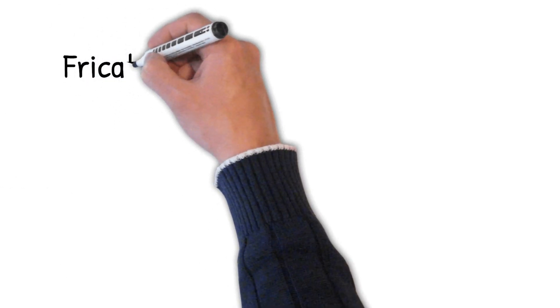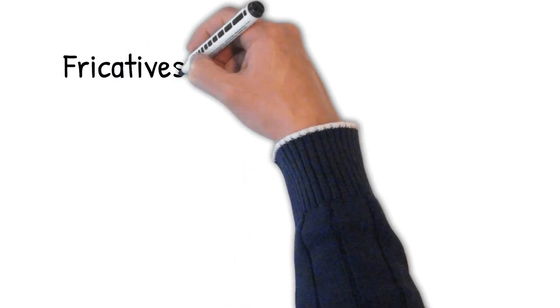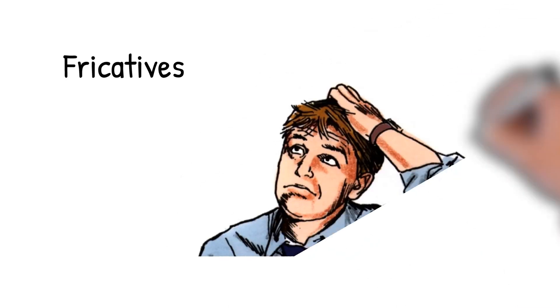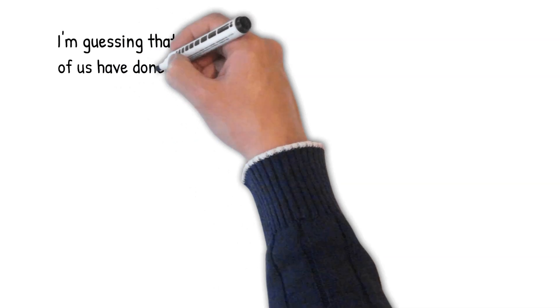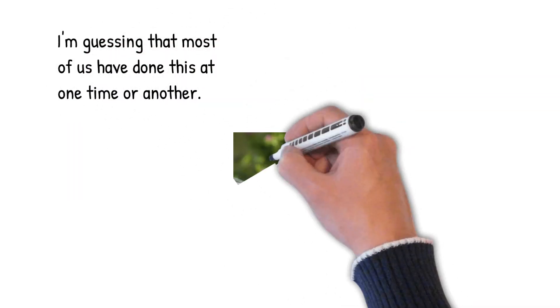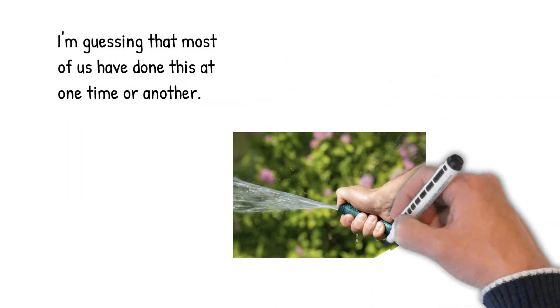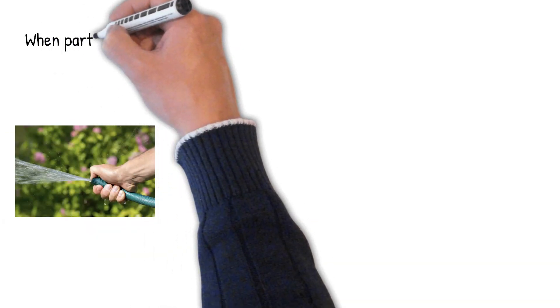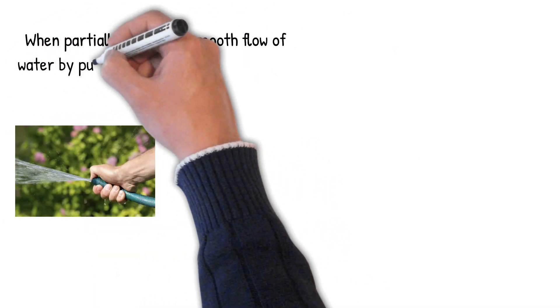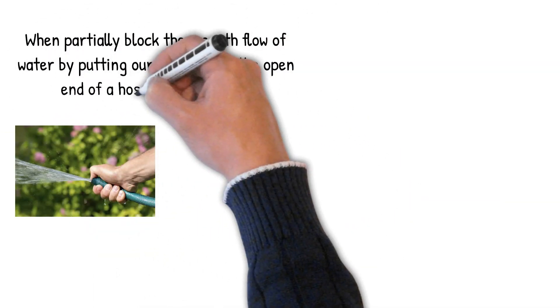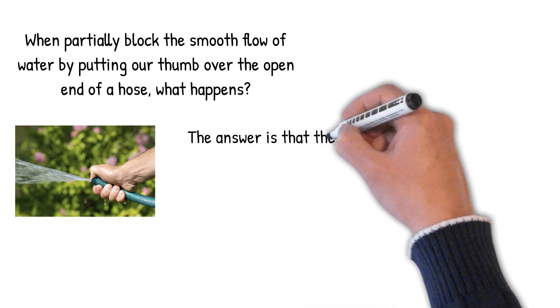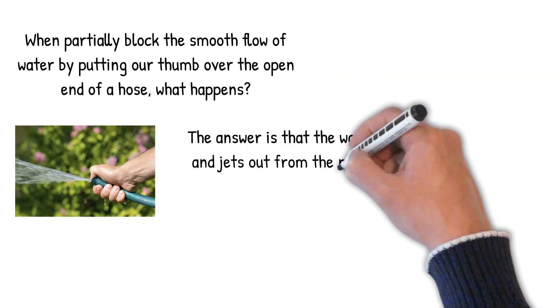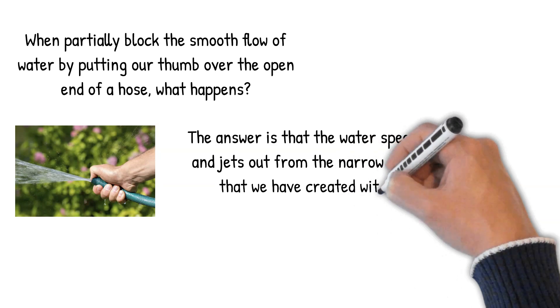Now that we have a handle on what stops are, it's time to look at fricatives. Let's start with another picture. I'm going to guess that all of us have done this at one time or another, probably to spray somebody else. This hose can help us understand what's going on when we make fricatives. By partially blocking the end of the hose, we take the smooth flowing water and we make it flow turbulently.